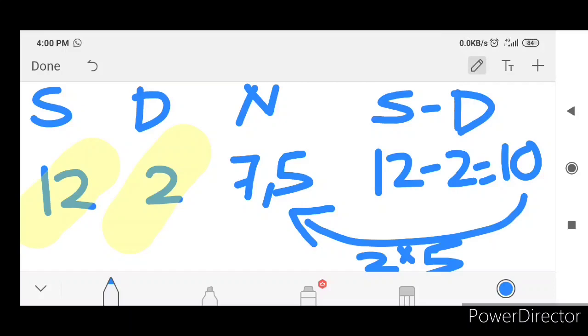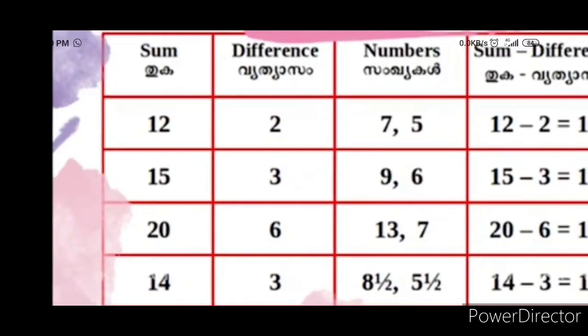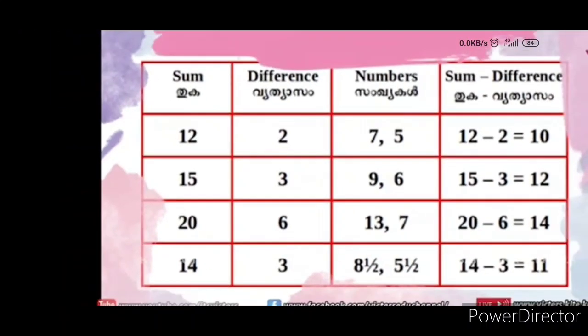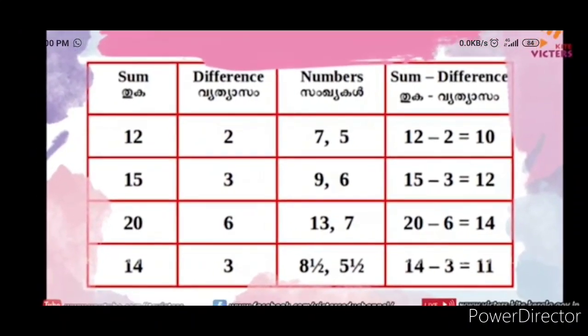2 into 5 is 10. The difference is 15. 15 is 13. The difference is 6. The difference is 13. The difference is 20. The difference is 24.